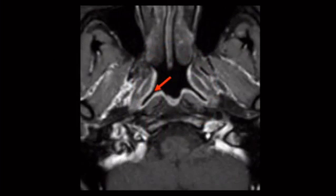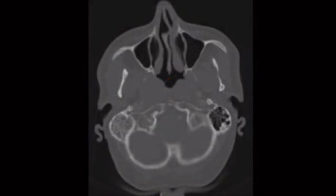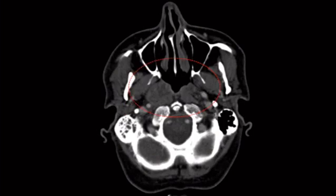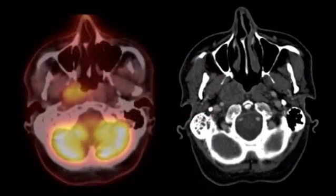Quick anatomy review: that right there is normal anatomy — the fossa of Rosenmuller. Here we've got a mastoid effusion, and it's unilateral. Anytime you see a unilateral mastoid effusion, you need to look at the fossa of Rosenmuller next, because a tumor there is going to obstruct the eustachian tube, which will result in a mastoid effusion.